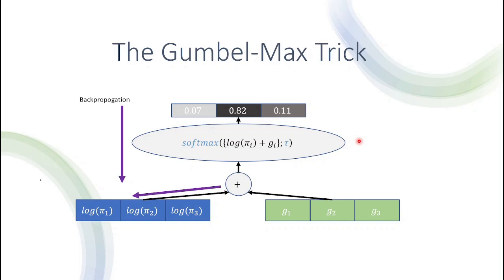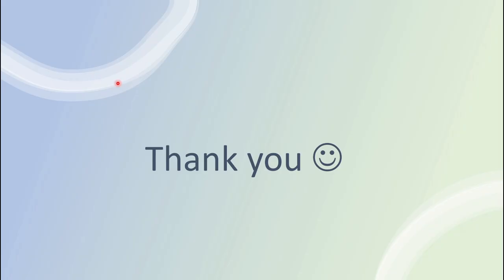To summarize the final form of the Gumbel-Max trick: to sample from a categorical distribution, we start with the model's initial probabilities, take their log, add Gumbel noise, then inject that into the softmax function parameterized by tau. This outputs a representation that should approximate a one-hot vector at the end of training. This enables back-propagation so the model can learn without any problem estimating the derivative. Thank you for watching — if you found it helpful, please like and subscribe.